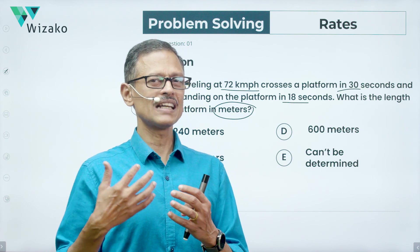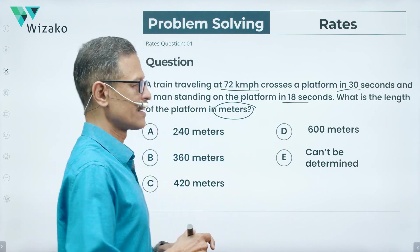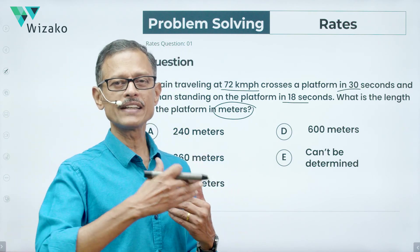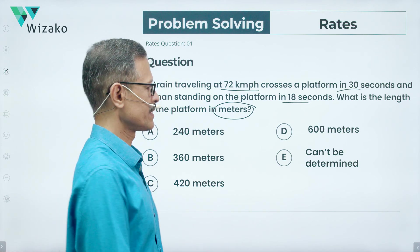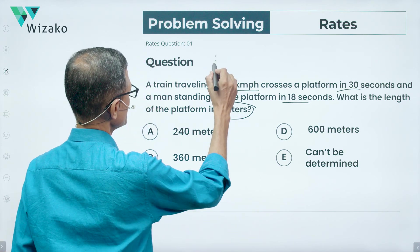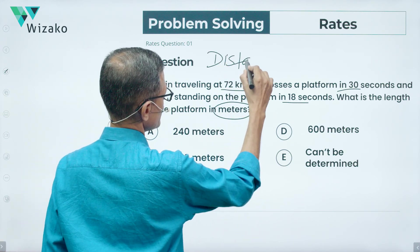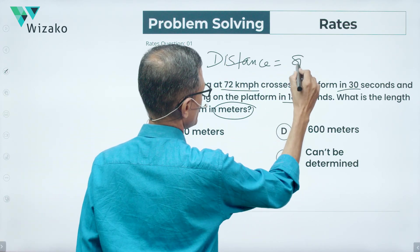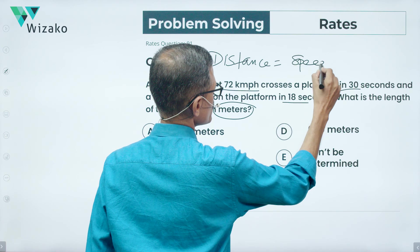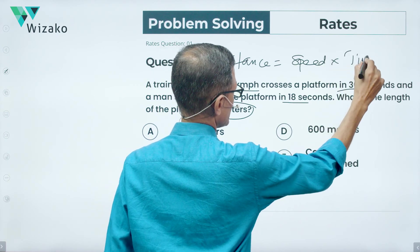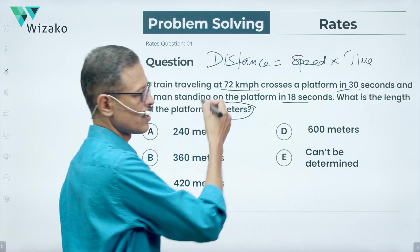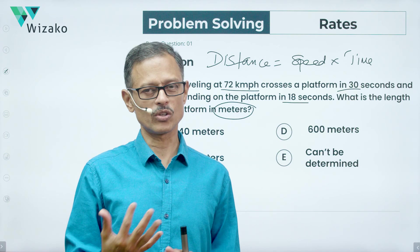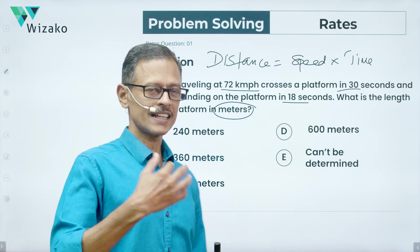This entire topic largely runs on a single relationship: Distance is equal to the product of Speed and Time. Most questions in this topic will be solved using this core formula.